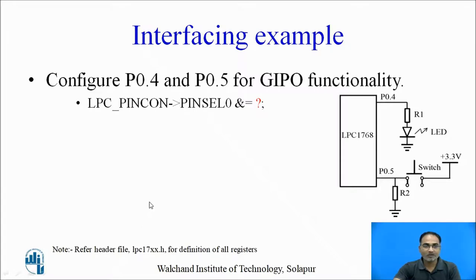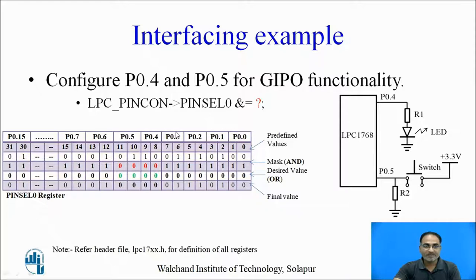Let us first configure P0.4 and P0.5 for GPIO functionality. We require the PINSEL0 register. Let us calculate the hex value for PINSEL0 which configures P0.4 and P0.5 as GPIO pins. PINSEL0 is a 32-bit register and we are interested in P0.4 and P0.5. We make these two pins GPIO pins by writing 00 in the particular bits of PINSEL0 — bits 8, 9, 10, and 11 are responsible for this. Applying the mask and setting the desired function, we will achieve this.